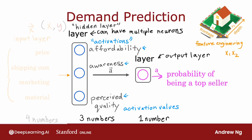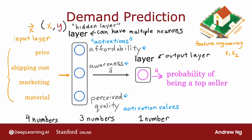So this is what makes neural networks one of the most powerful learning algorithms in the world today. To summarize: a neural network has an input layer with a vector of features — four numbers in this example — fed to the hidden layer, which outputs three numbers. I'm going to use a vector to denote this vector of activations that the hidden layer outputs. Then the output layer takes those three numbers and outputs one number, which is the final activation or the final prediction of the neural network.